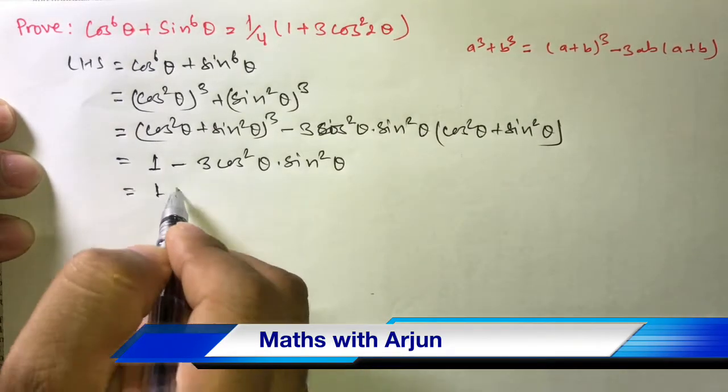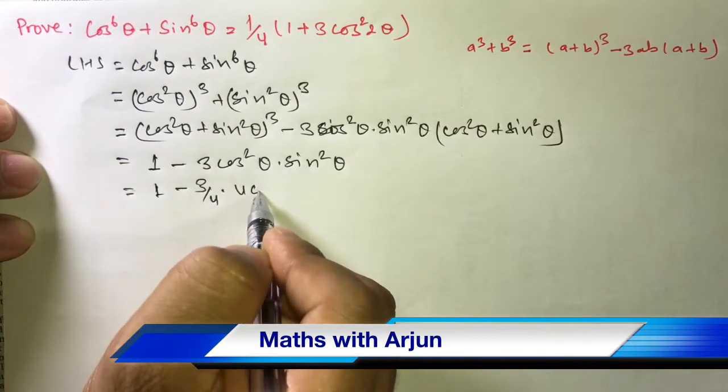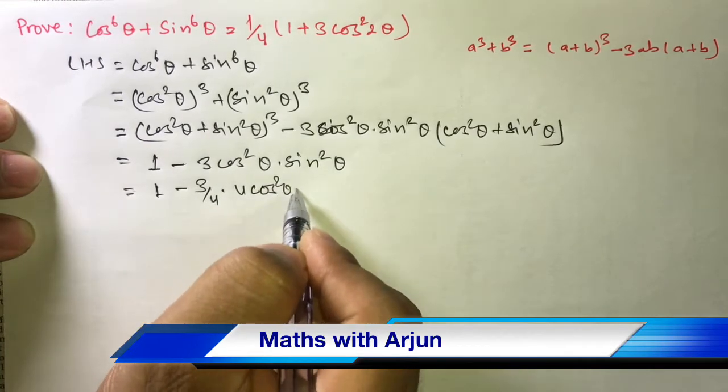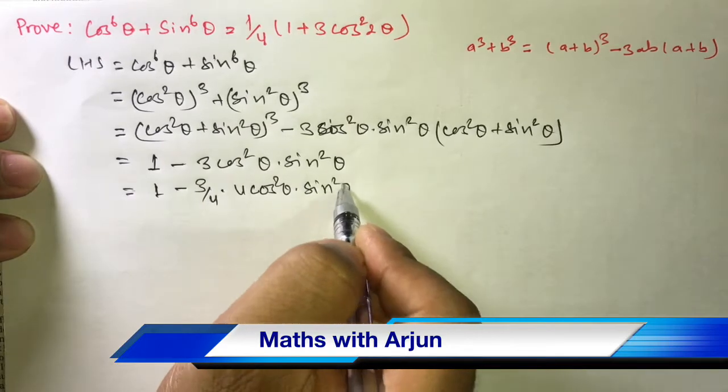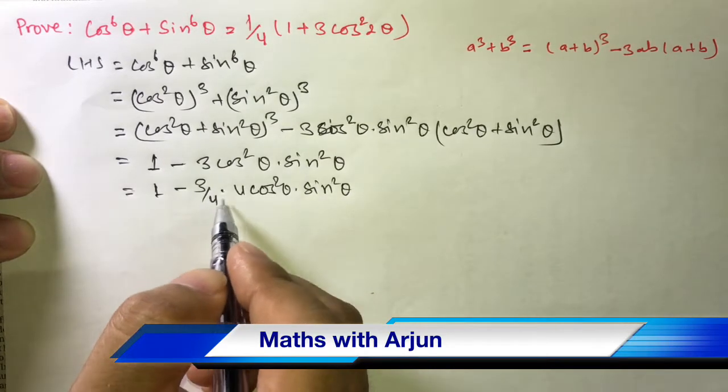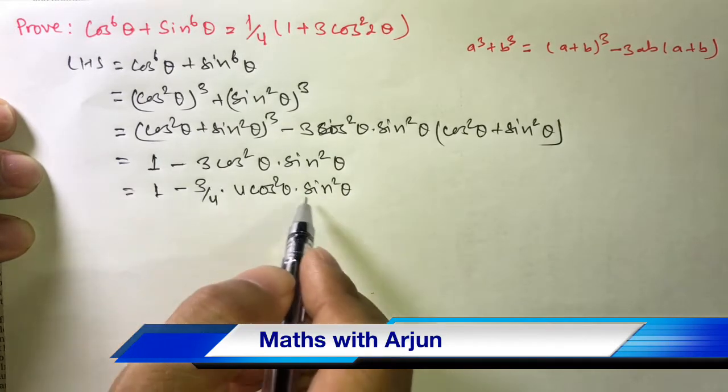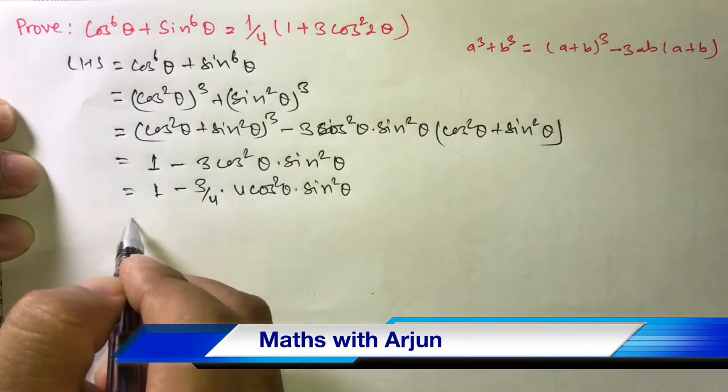Here 1 - ¾ × 4cos²θ·sin²θ. This 4 will be cancelled, then we have 3cos²θ·sin²θ.